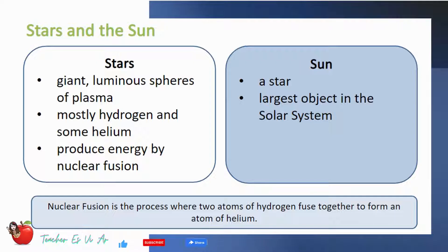Let us first discuss what stars and the sun are. Stars are giant, luminous spheres of plasma. It consists mostly hydrogen and some helium. It produce energy by nuclear fusion.